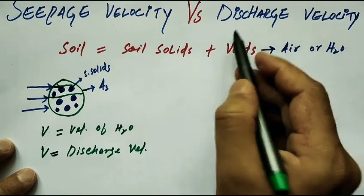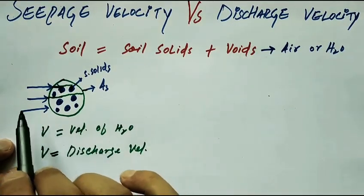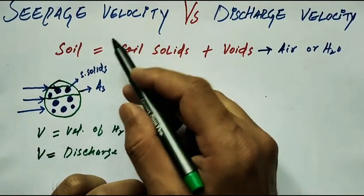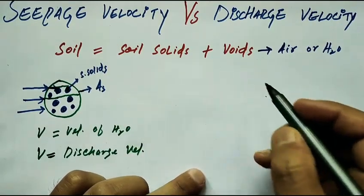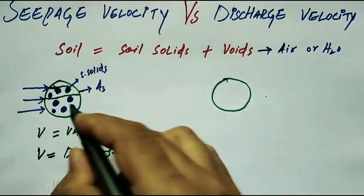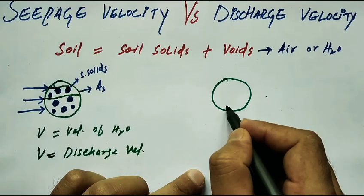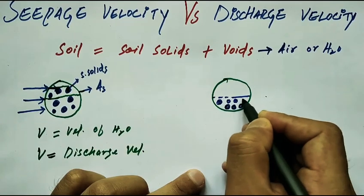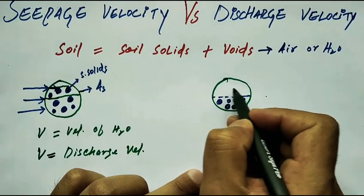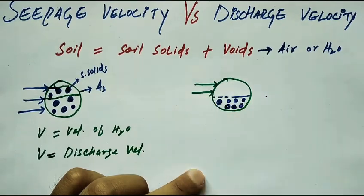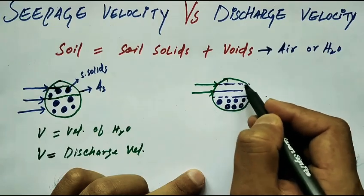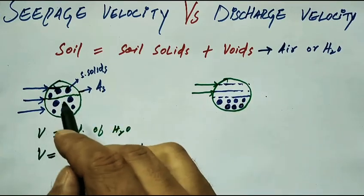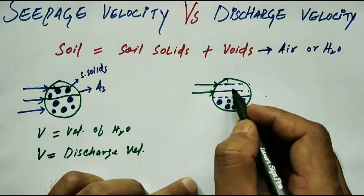Discharge velocity is the velocity when water flows through the entire soil sample. Now let's discuss seepage velocity. Suppose we take this soil sample and separate the soil solids from the soil voids. Now water will flow through only the void space, flowing freely without any restrictions, so the velocity will not be reduced.